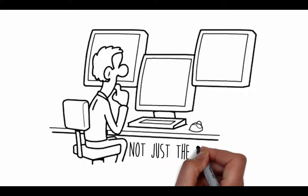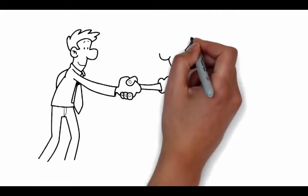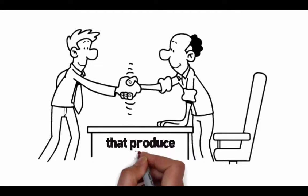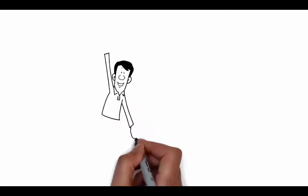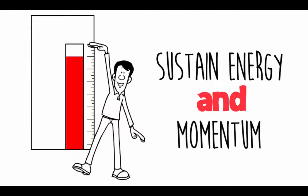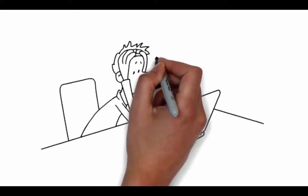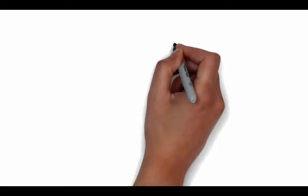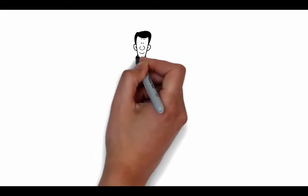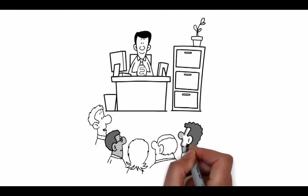Focus on the game, not just the score. Reinforce behaviors that produce results. Sustain energy and momentum. Correct poor performance without drama. Build productive relationships. And be the leader people want to work for.